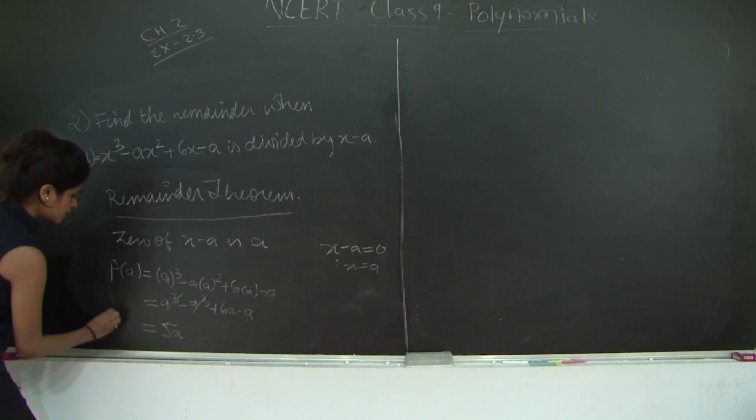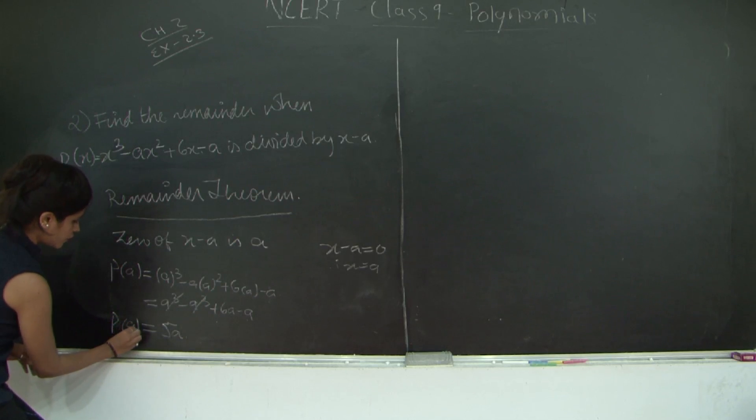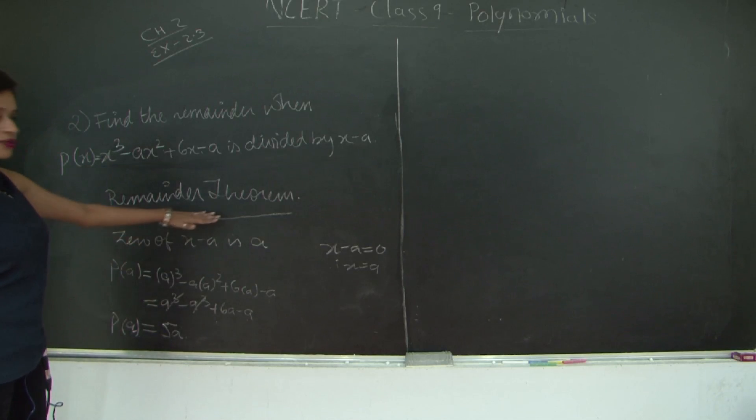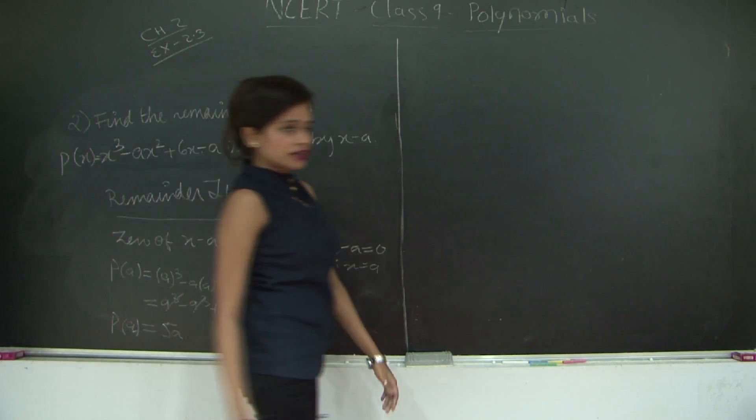So my remainder when x is equal to a is, this is a and not 9, is 5a. So we found the remainder using the remainder theorem. Now let's go ahead and find the remainder using the long division method.